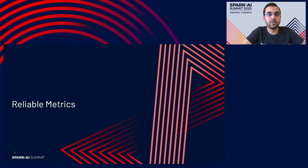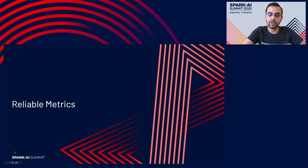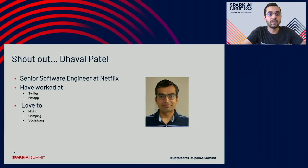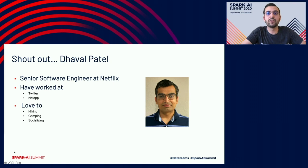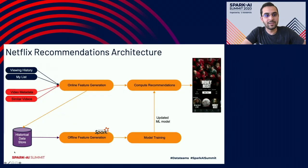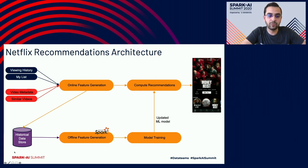Let's move to our second problem statement: we want to enable metrics and improve the efficiency of debugging while working with Spark jobs. A shout-out to my teammate David Patel who implemented this. We're back to the recommendations architecture, and in this section we'll focus on the interaction between the historical data store and the offline feature generation.